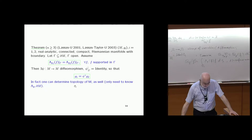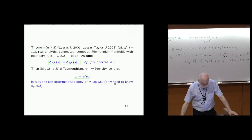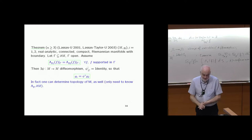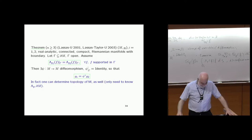For people interested in this: not only can you recover the metric, but you can also recover the topology — you can have holes, handles, many things. You only need the Dirichlet-to-Neumann map and the boundary, and then you can recover everything about the inside. But this assumes real analyticity, which is a very strong assumption. The smooth case we don't know.